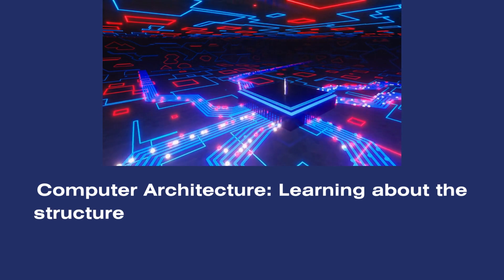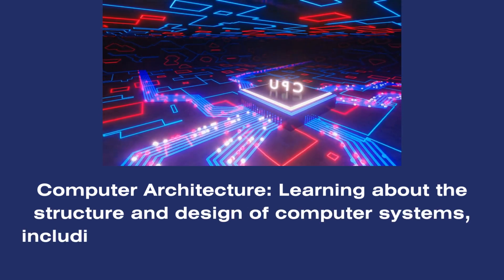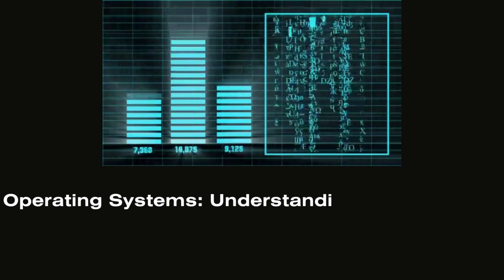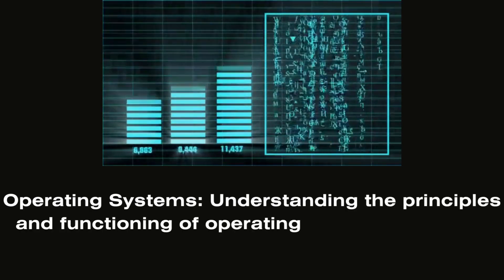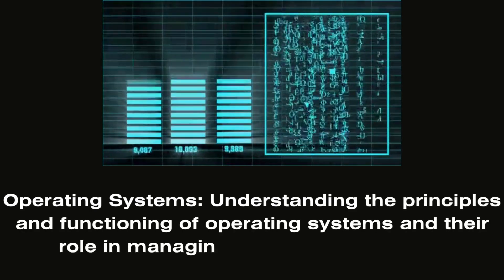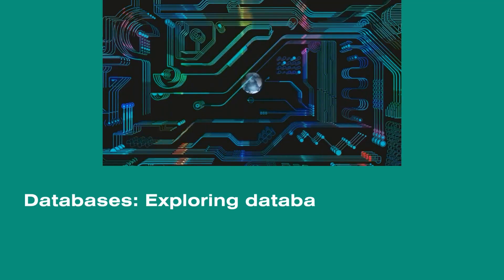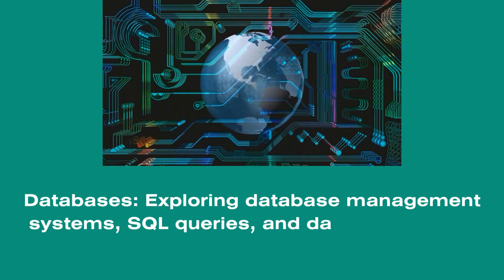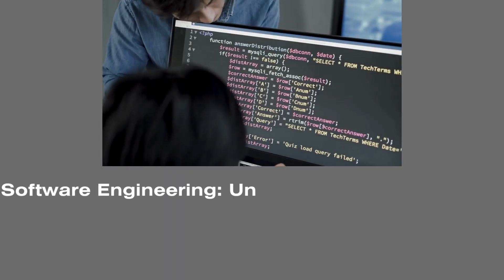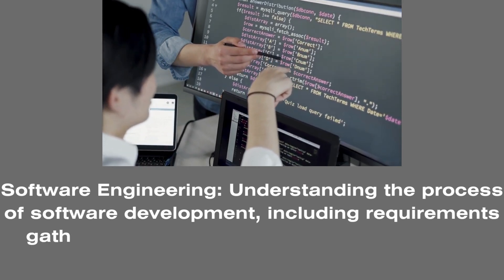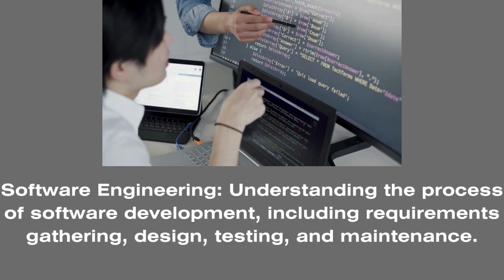Computer architecture: learning about the structure and design of computer systems, including CPU, memory, and input/output devices. Operating systems: understanding the principles and functioning of operating systems and their role in managing computer resources. Databases: exploring database management systems, SQL queries, and database design concepts. Software engineering: understanding the process of software development, including requirements gathering, design, testing, and maintenance.